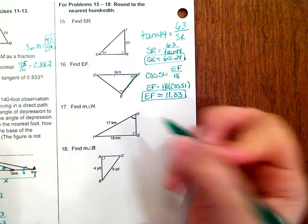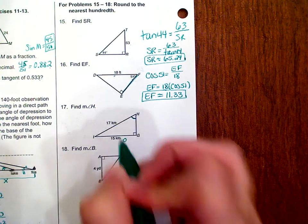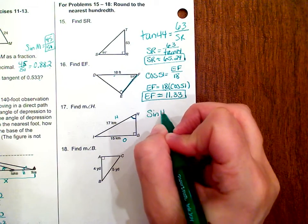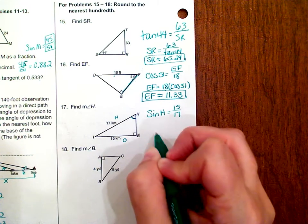So here's the angle we're asked to find. This is your opposite side, this is your hypotenuse, which is going to be sine. So the sine of H is equal to 15 over 17.